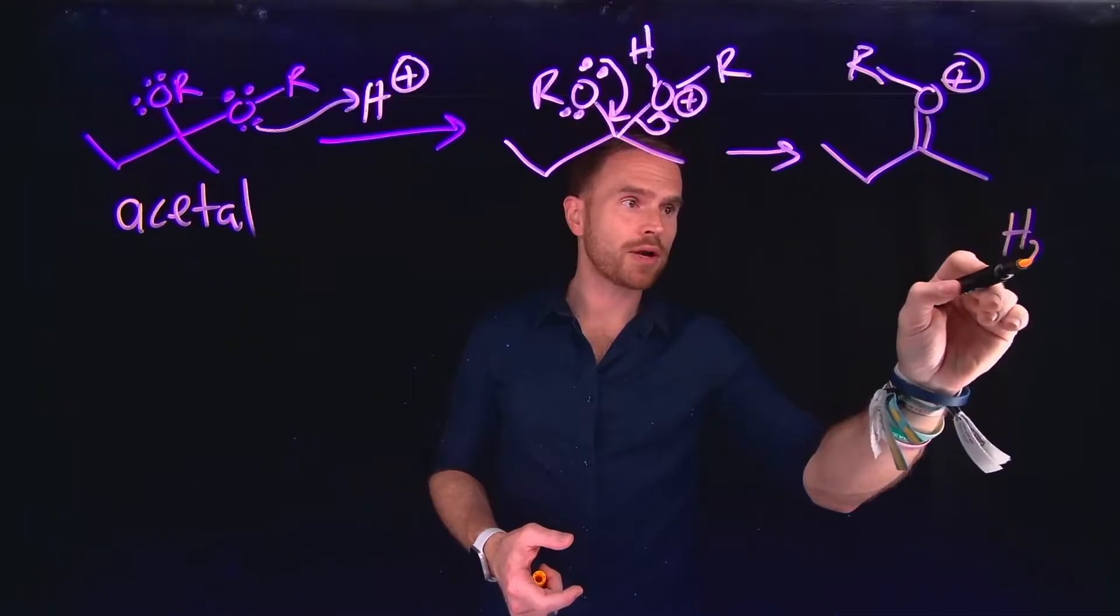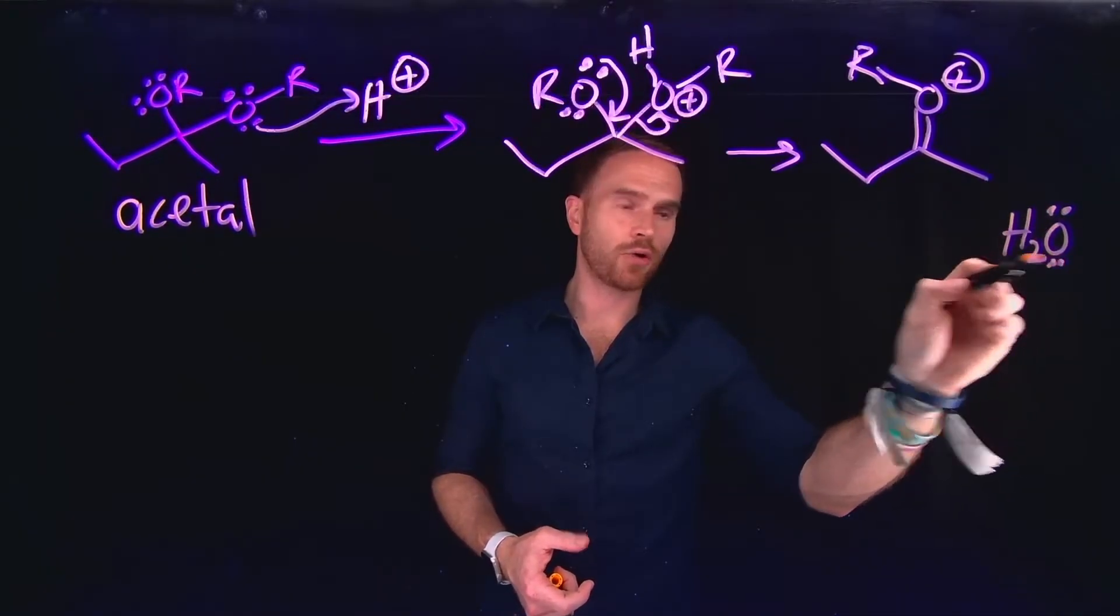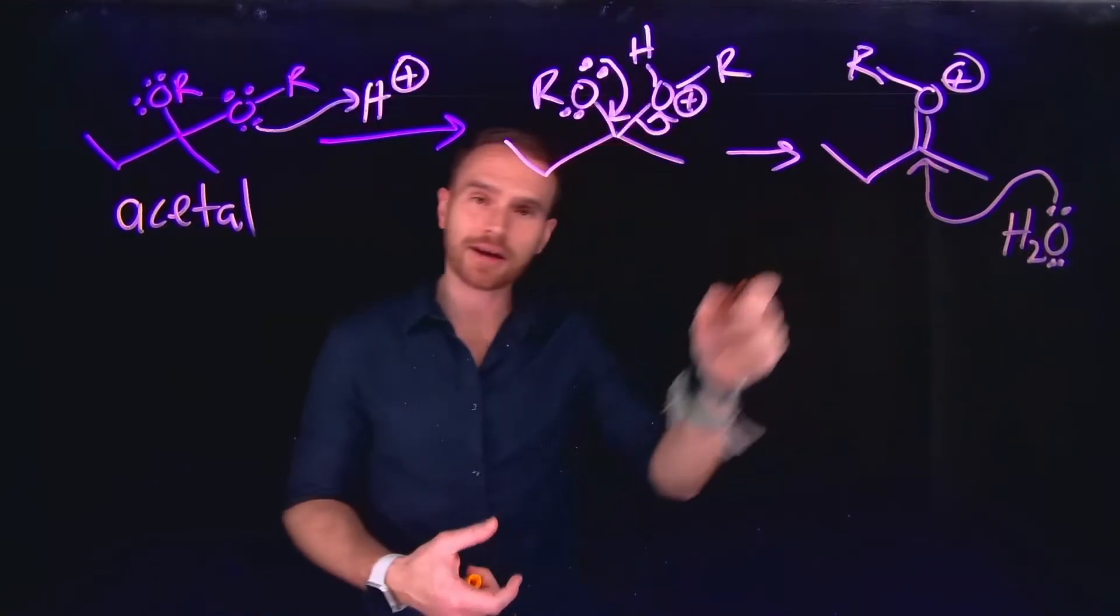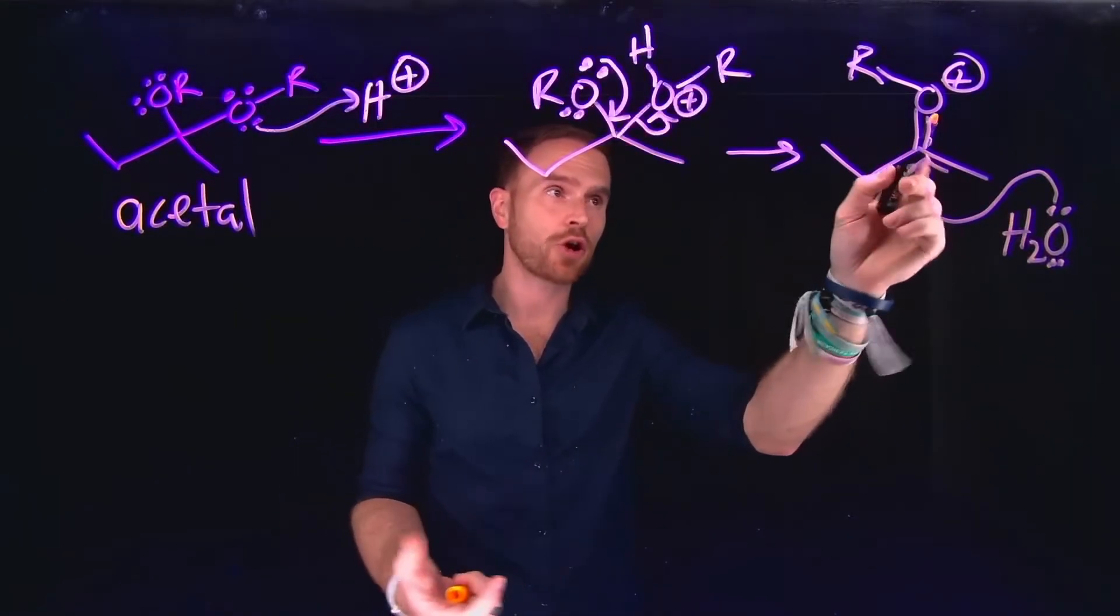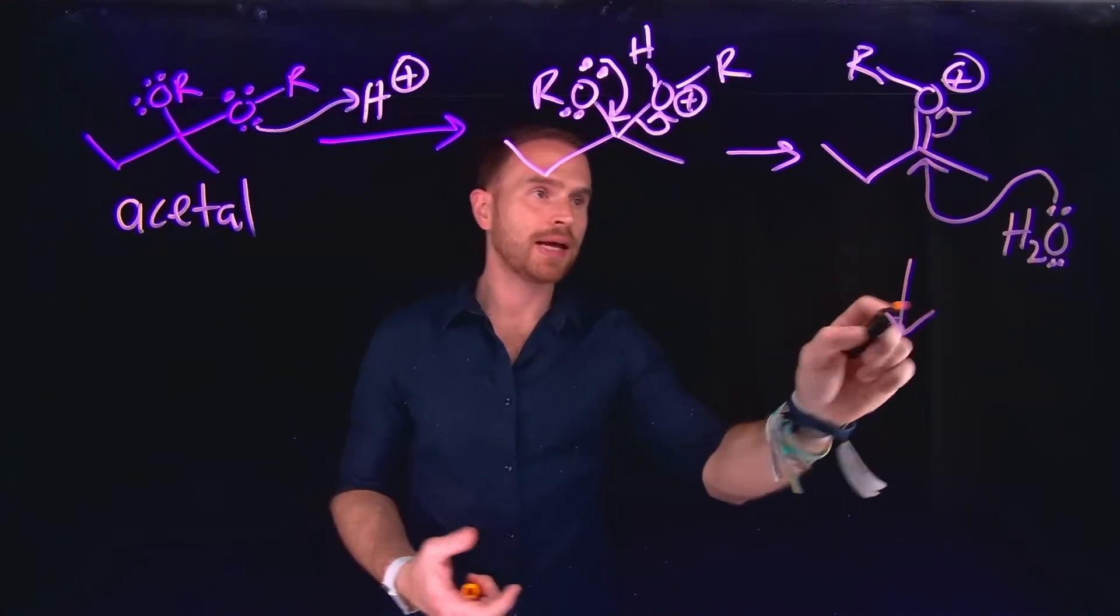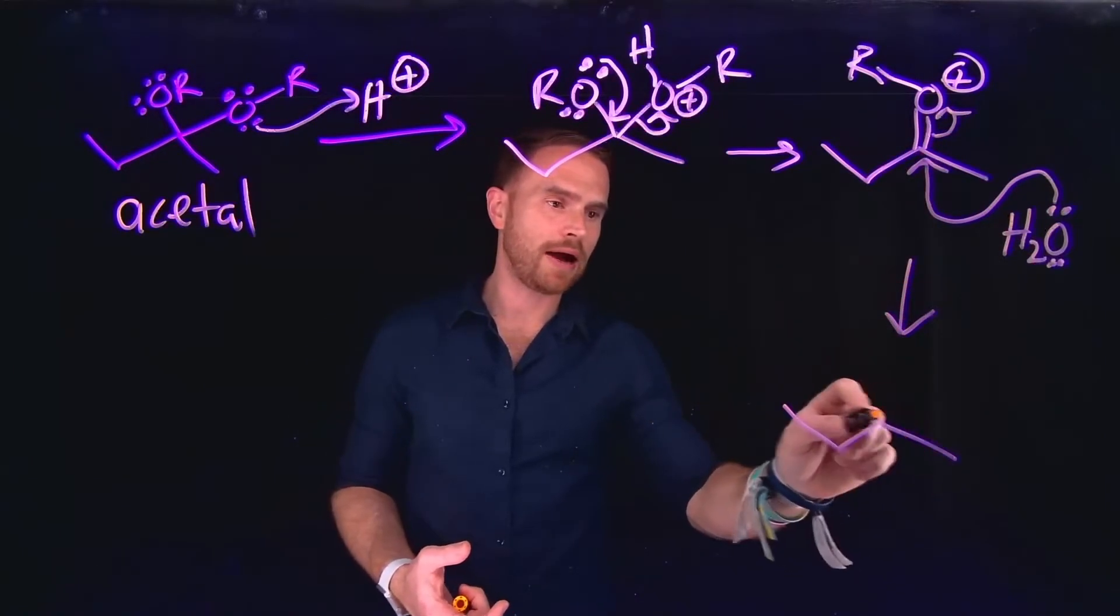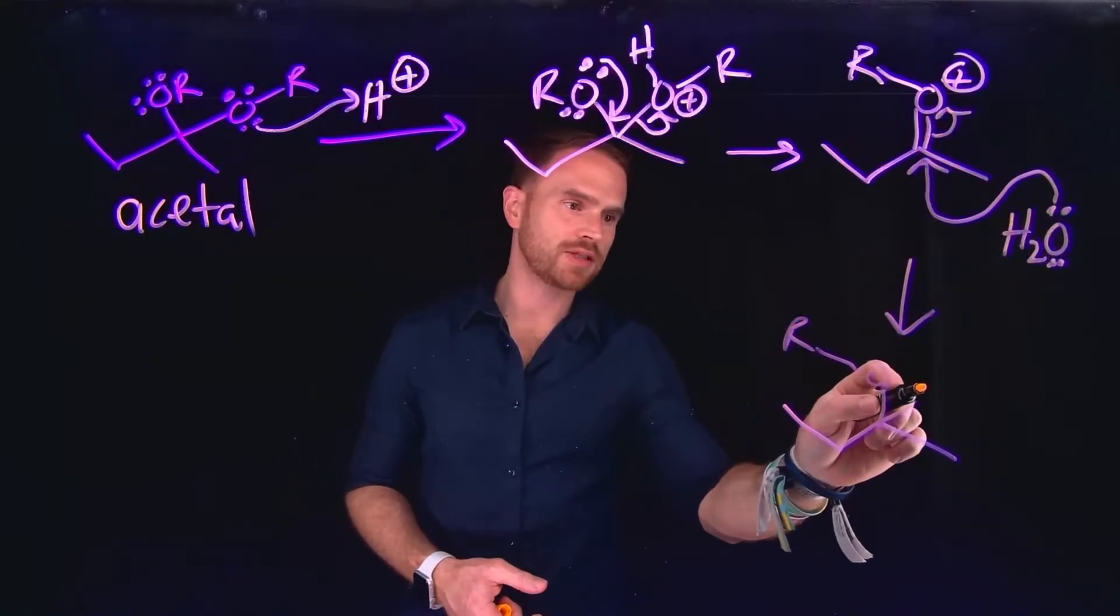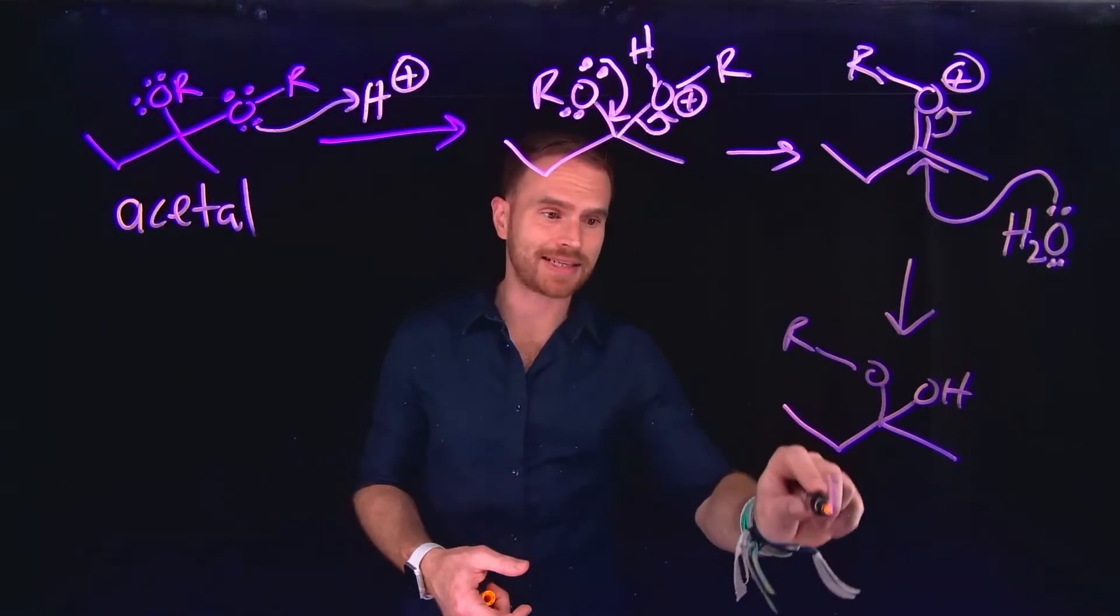And then from here, what can happen is we can still have our acid present in the system, and that acid is aqueous. So importantly, now we have an aqueous compound, or H2O, which has a lone pair. Which will come and attack that carbonyl carbon, which has been turbocharged. So because of that, this will kick the electrons back up, generating a brand new alcohol, in addition to your ether, which we have previously said was called a hemiacetal.